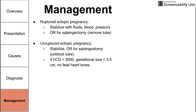If you meet certain criteria — an HCG of less than 3,000, a small gestational size of less than 3.5 centimeters, and no fetal heart tones — you can treat the unruptured ectopic pregnancy with medication, usually methotrexate, sometimes with leucovorin. It's important to note that this management approach and diagnostic algorithm may vary by hospital or clinical team; this represents classic teaching but may not be universal.